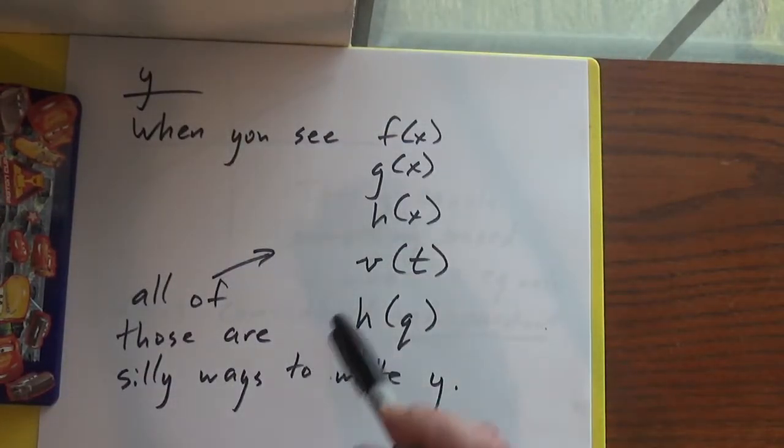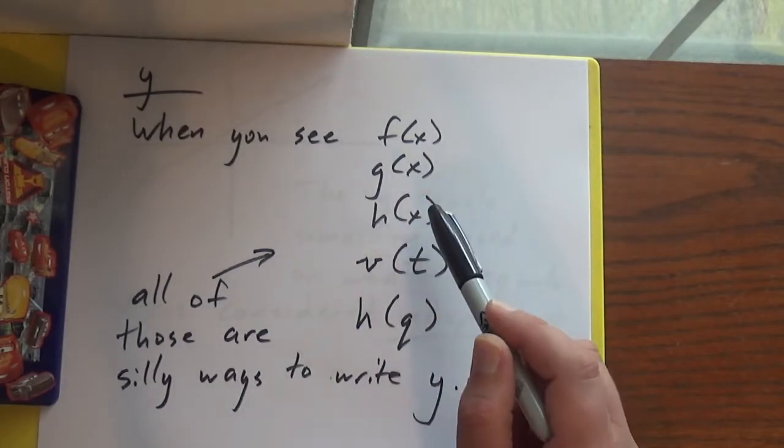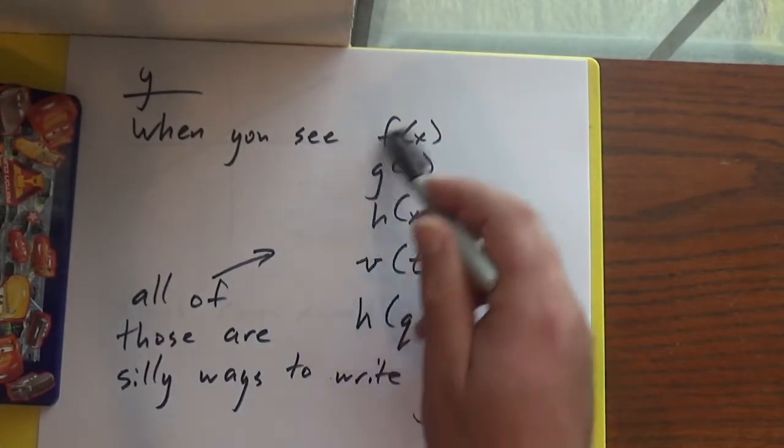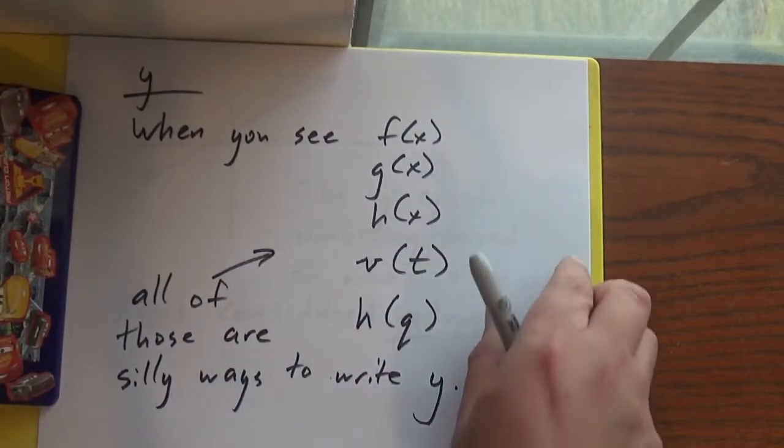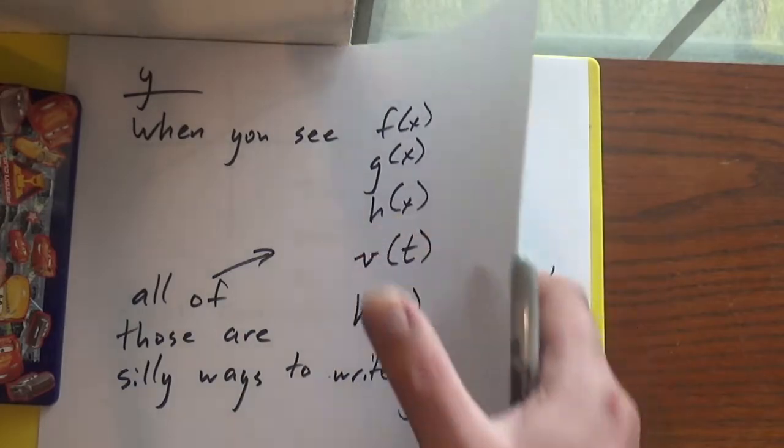So when you see f(x), g(x), h(x), v(t), h(q), any of these things, all of those are just silly different ways to write y. It's all just the same thing as the letter y.